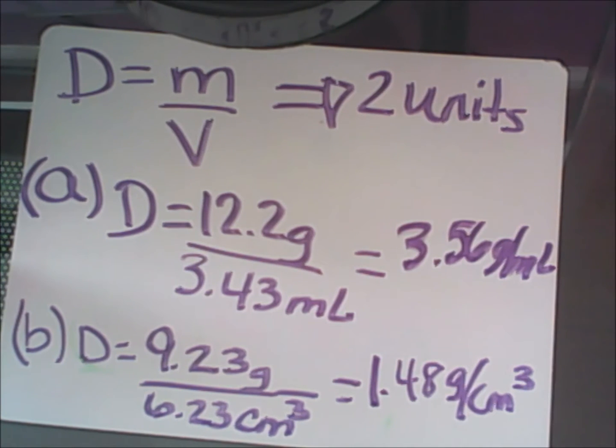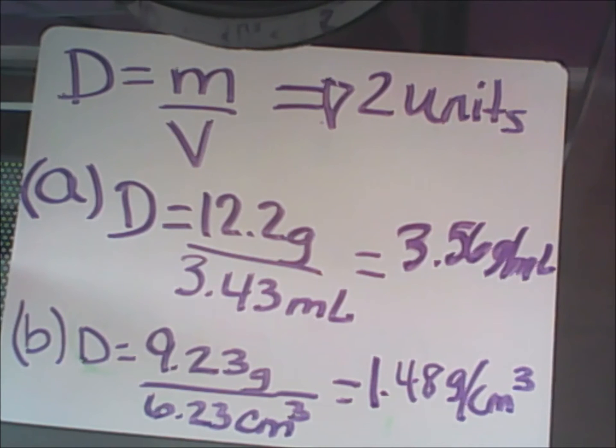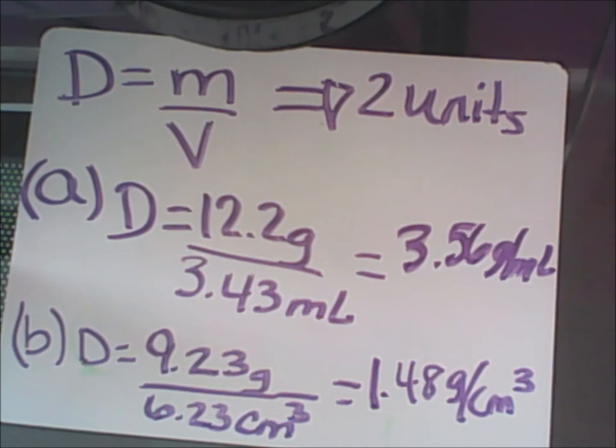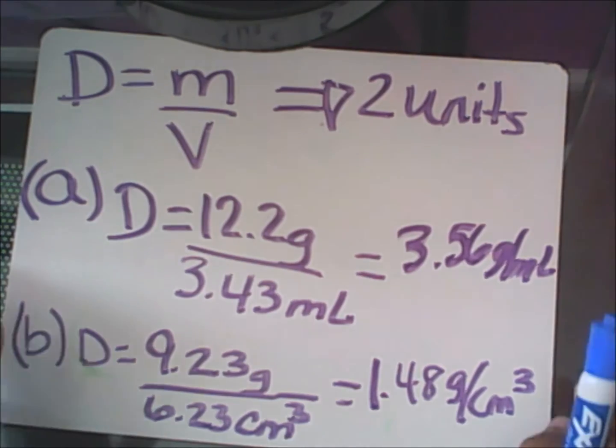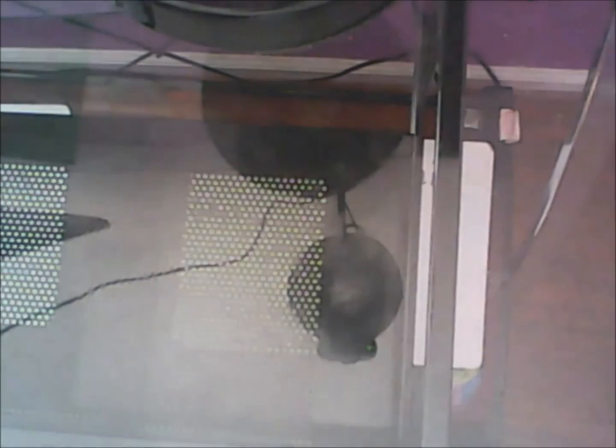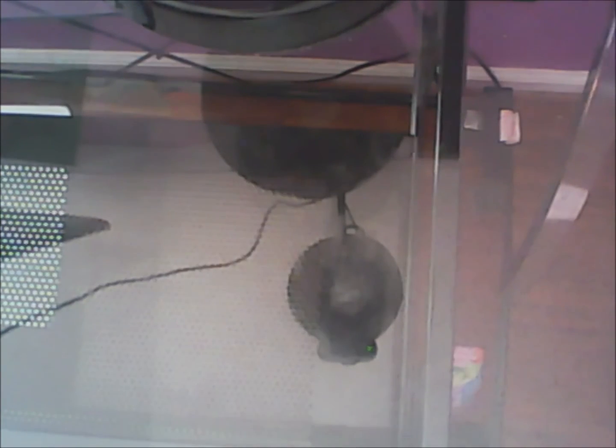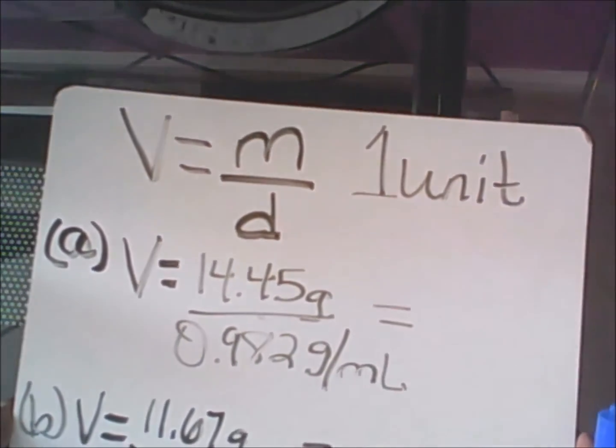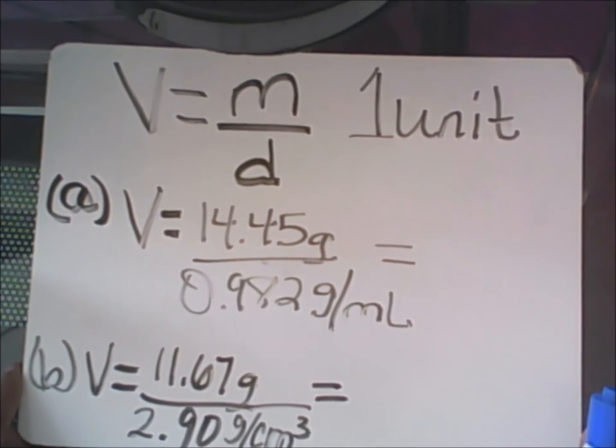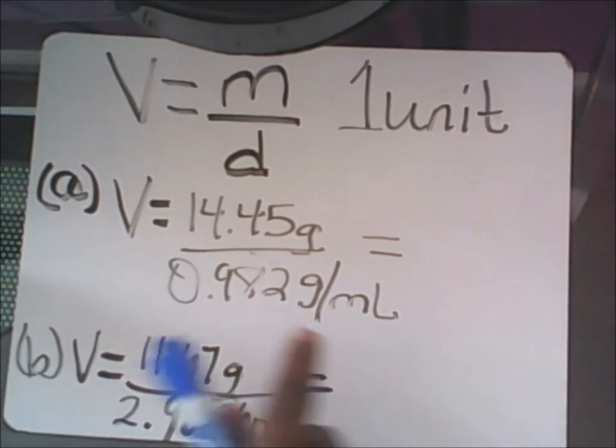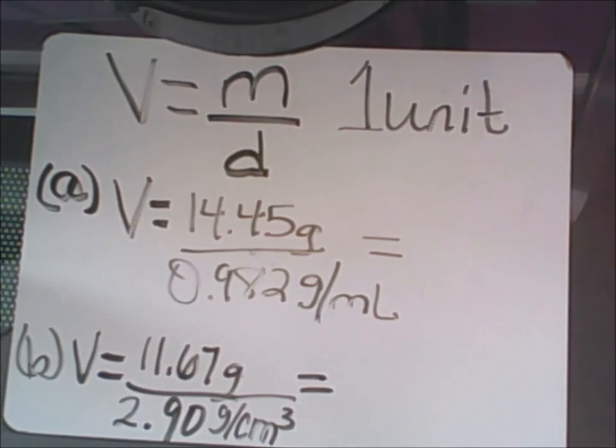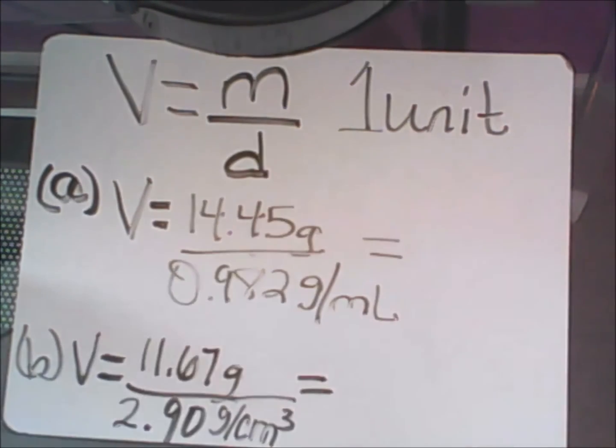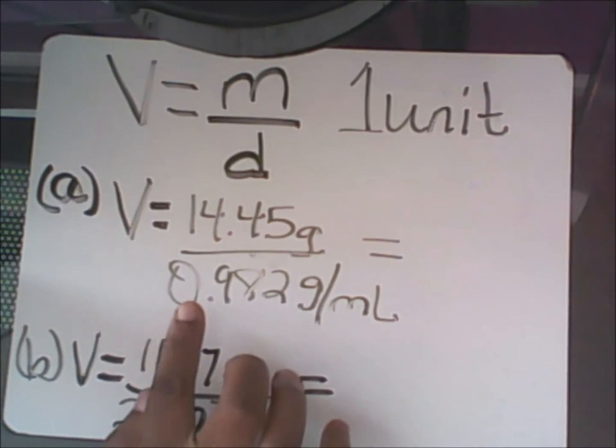Let's take a look at the next example where we have to calculate the volume of any object given the mass and the density. One thing I want you to keep in mind is that the boxes that you see on that worksheet are used for you to incorporate the formulas. As we look at the next one, I have volume equals mass over density. This is what you can put in that box. Volume has one unit. Volume is equal to the mass of 14.45 grams divided by 0.982 grams per milliliter.